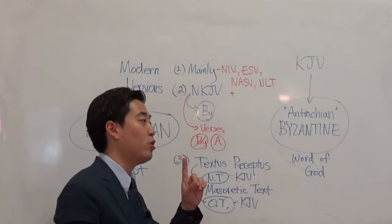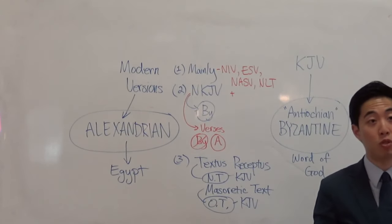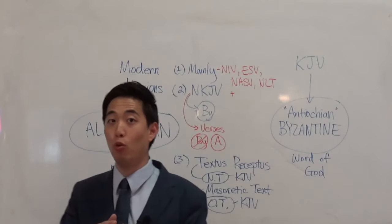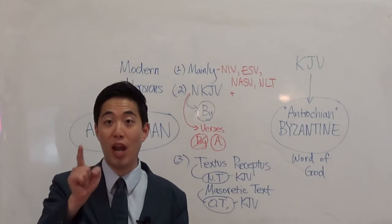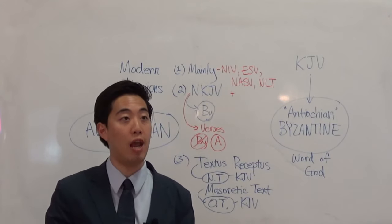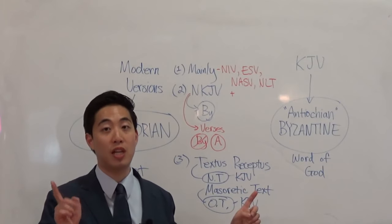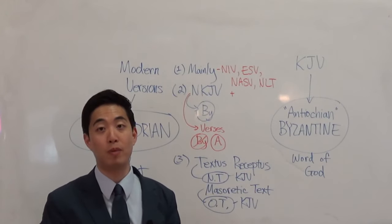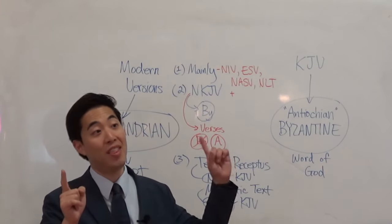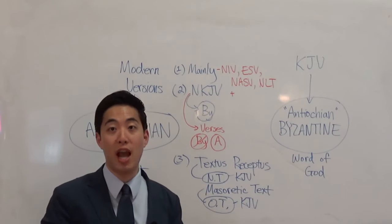If you believe the Hebrew Old Testament and Greek New Testament are perfect, then why are there differences with the English King James Version? Many IFB churches who are King James only believe the Textus Receptus is the infallible, perfect, pure word of God — but when you hear that, it's a red light. They are not truly King James only, because they'll choose the Textus Receptus over the KJV when there's a difference.